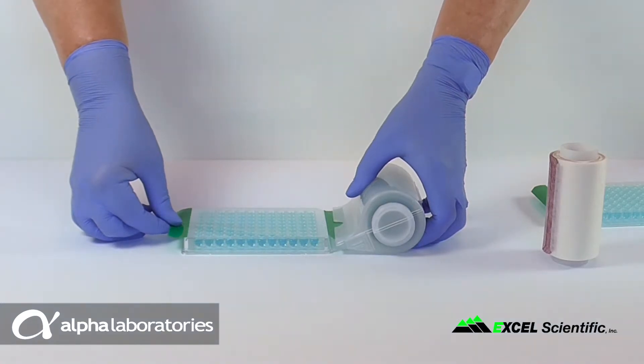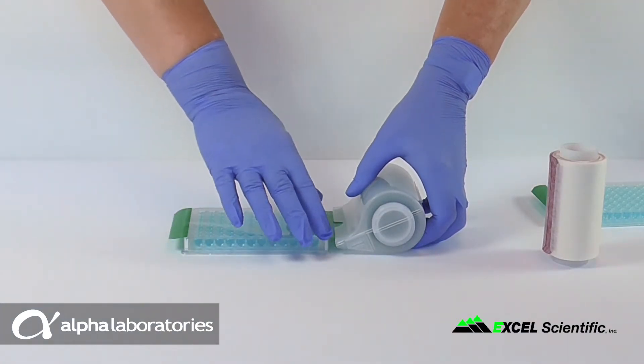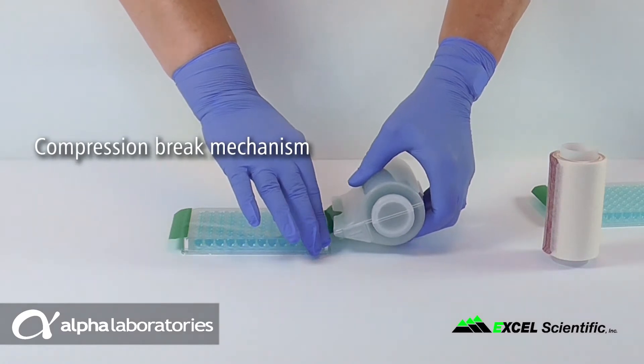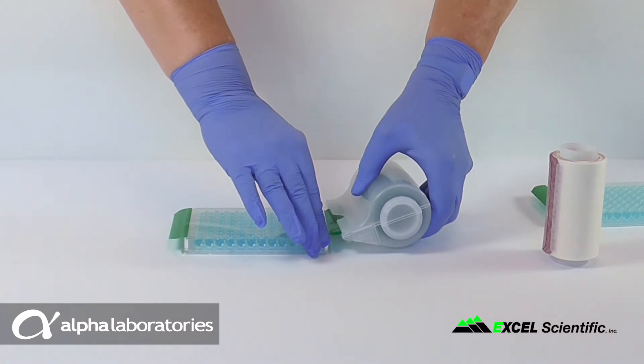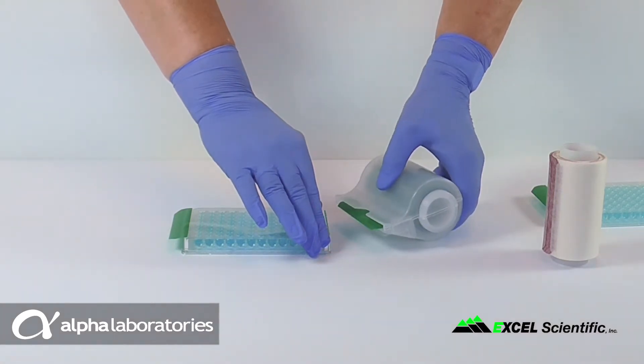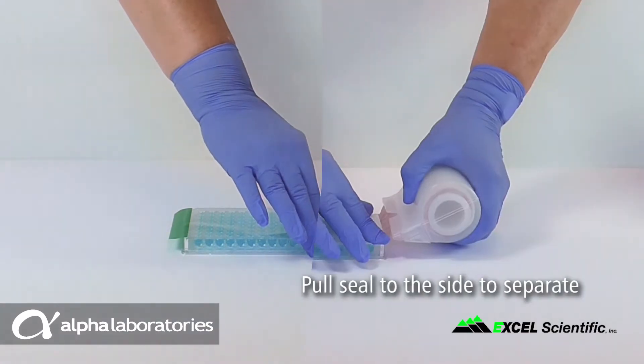Several unique features contribute to the ease and usability of the SealMate dispenser. A compression break mechanism prevents the roll from turning as the dispensed sheet is separated from it. To tear the perforation it is important to pull the seal to the side rather than upwards.